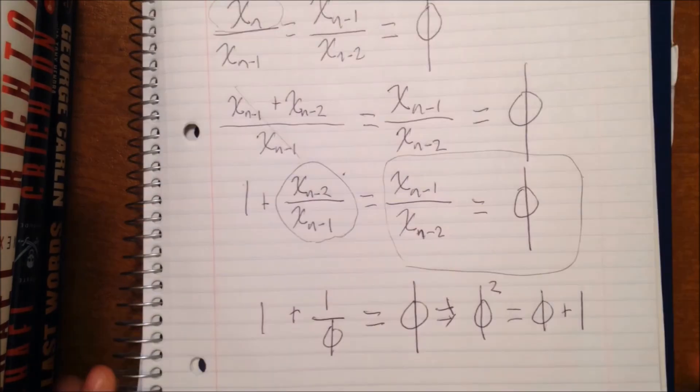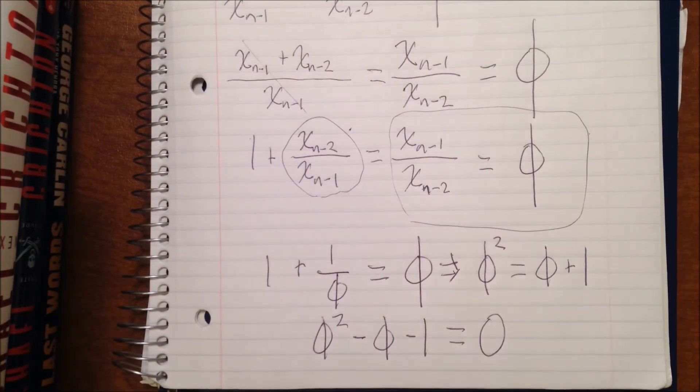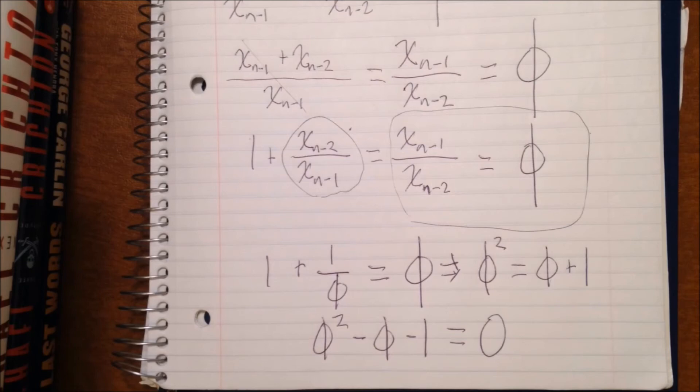And if we multiply both sides by phi, we can get ourselves a nice quadratic equation. Phi squared is equal to phi plus 1, and then we can just rearrange that to phi squared minus phi minus 1 equals 0.